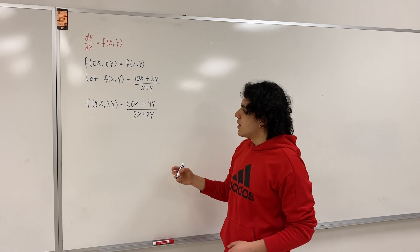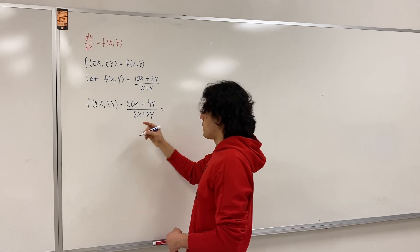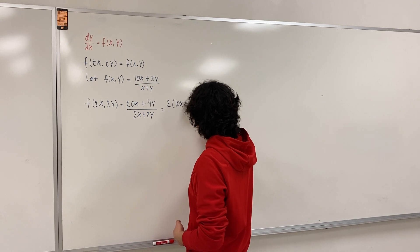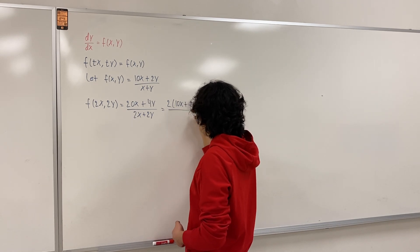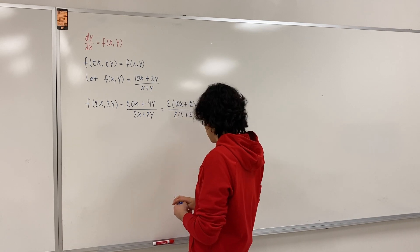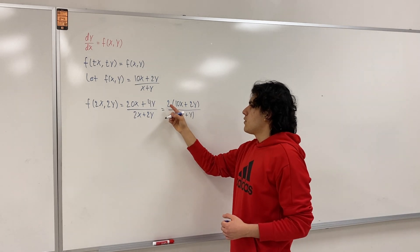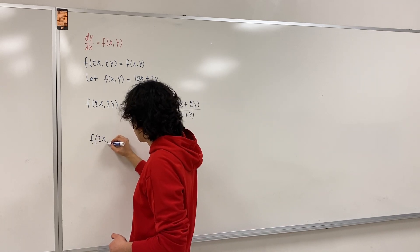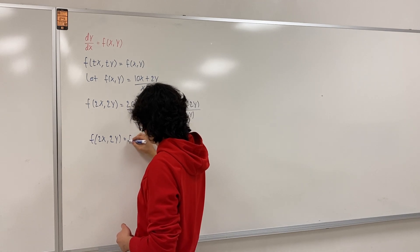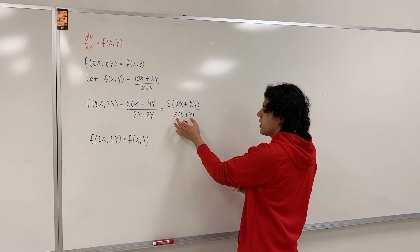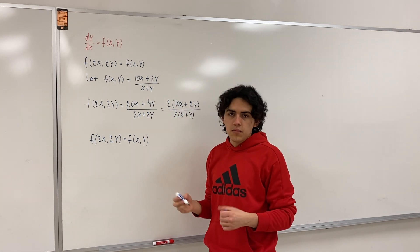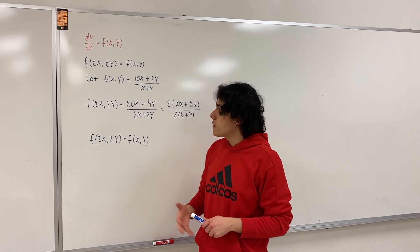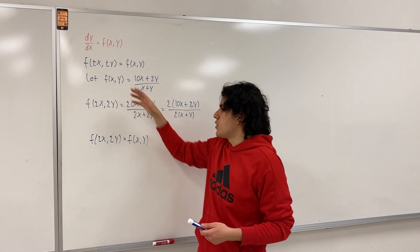Notice that you could factor out a 2 from the numerator and the denominator, and you would have 2 times (10x plus 2y) divided by 2 times (x plus y). Of course, these 2s cancel out, and in the end you get f of 2x, 2y equal to f of x, y. This is what we mean when we say we have a homogeneous differential equation — the right-hand side satisfies this property.